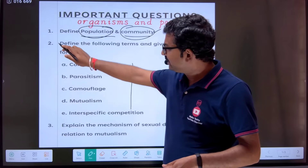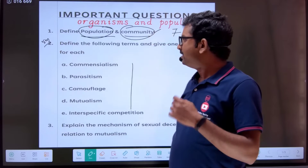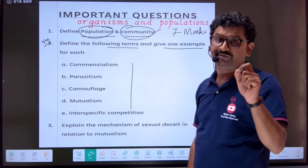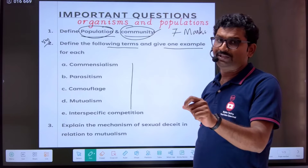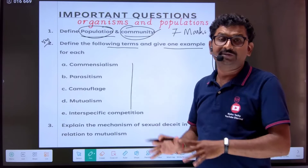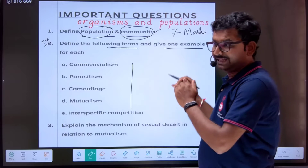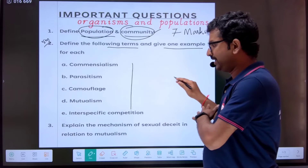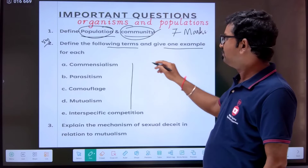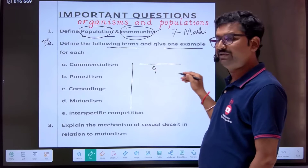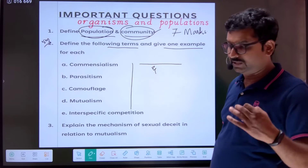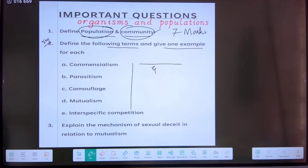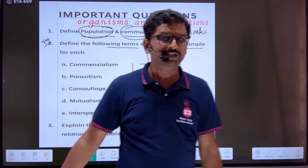They will ask you to define the following terms and give one example for all population interactions. It is very important to be clear with the examples — especially for population interactions, all the types and their examples: commensalism example, parasitism, camouflage, mutualism — definition and example. They might also ask you to write an example for each type of population interaction.